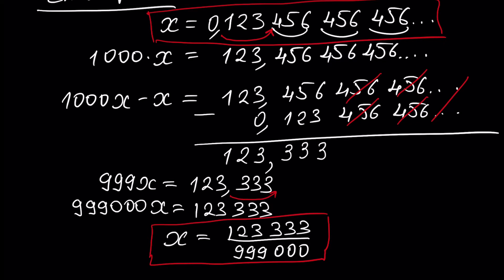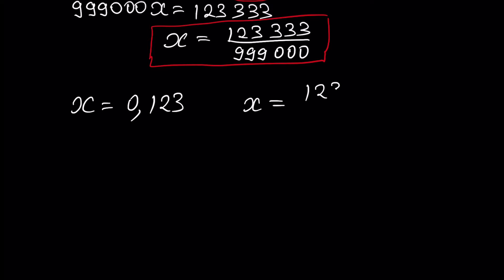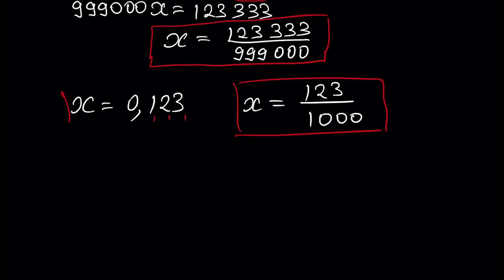Along the same lines, we can calculate the rational representation of any number with infinite digits and a period. The first case is obvious: for example, if we have a number x equal to 0.123, it is easy to see that x is 123 divided by 1000. And this is the rational representation of that number.